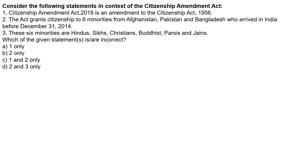The correct answer for this question — since it asks about the incorrect statement — is that the Citizenship Amendment Act 2019 is actually an amendment to the Citizenship Act 1955, not 1956. Statements two and three are correct regarding the CAA. So the incorrect statement is the first only. The correct answer is Option A.